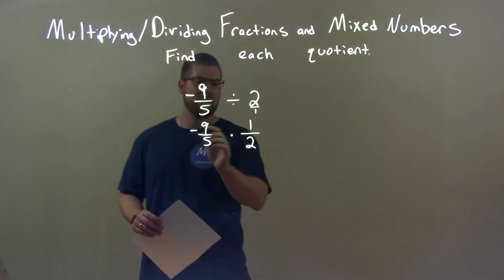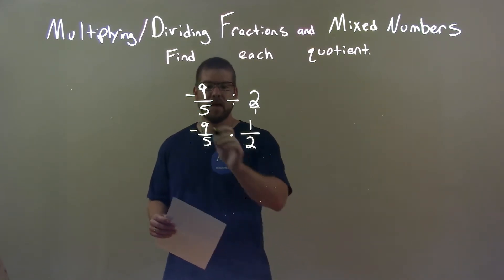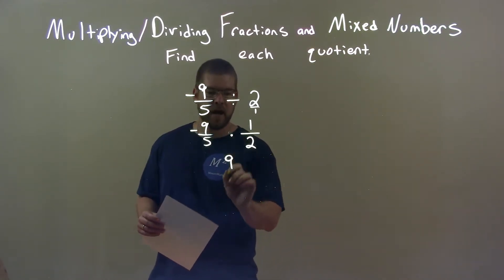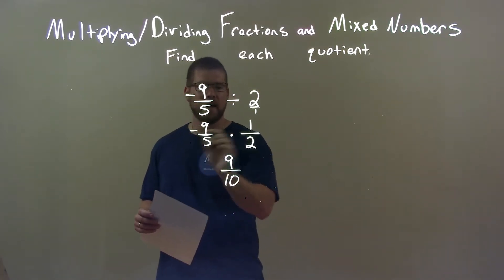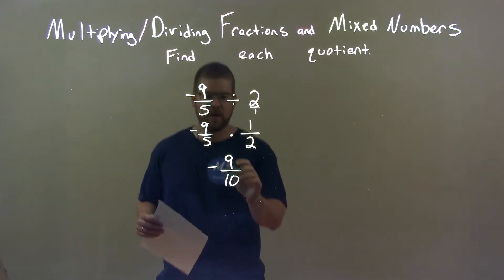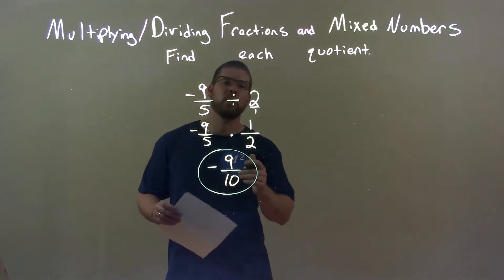Now, we just multiply across the numerator and multiply across the denominator. 9 times 1 is 9. 5 times 2 is 10. And a negative times a positive is a negative. So, final answer: negative 9 over 10.